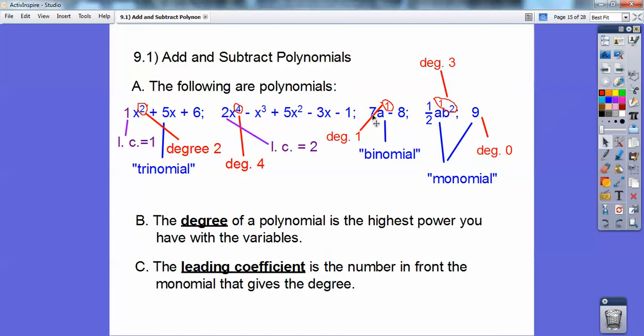The leading coefficient of this guy is 7. And then the leading coefficient of the other one is a half, and then 9 is called a constant because it doesn't have any variables with it. So there's no degree. It's just called a constant then.